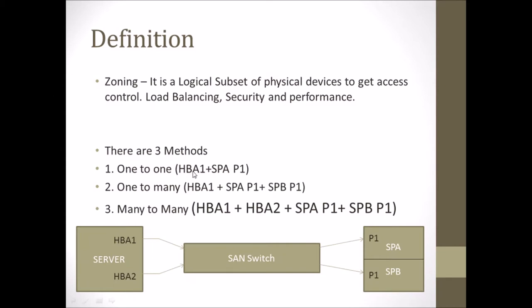In one-to-one, you can see HBA 1 and SPA port 1 — we can create a zone between them. In this diagram, in the server we have two HBA cards available for redundancy. HBA 1 is connected to the SAN switch and HBA 2 is also connected to the SAN switch. For better understanding I have used only one SAN switch here.